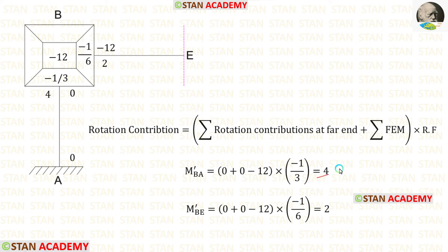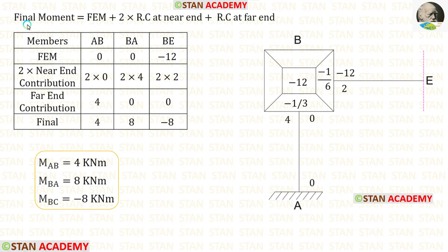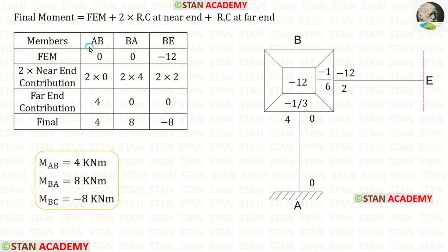Let us apply the values of M dash BA and M dash BE. In this analysis, only one iteration is enough. Now let us make the table and find the final moments. The formula to find the final moments is: fixed end moment plus 2 into rotation contribution at near end plus rotation contribution at far end. In the table, let us enter all members, then the fixed end moments, then 2 times the near end contributions. For AB the near end contribution is 0, so 2 into 0. For BA it is 4, so 2 into 4. For BE it is 2, so 2 into 2.